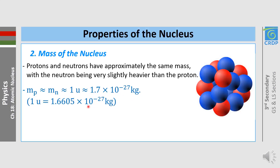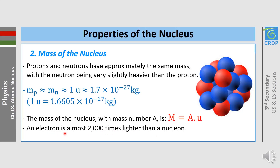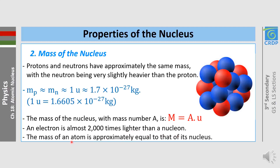The mass of the nucleus is given by M = AU, where A is the mass number and U is the atomic mass unit. Since the mass of the electron is negligible compared to that of the nucleon, we can consider that the mass of the atom is approximately equal to that of its nucleus.